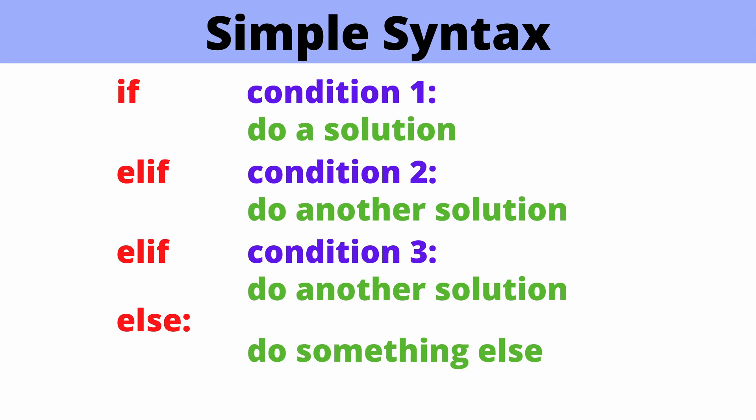The syntax for the if, elif, and else conditional statements is pretty straightforward. We begin by writing the keyword 'if' followed by the first condition on a single line. Note that the condition is followed by a colon, which tells Python that the next line is part of this block of code and should be indented four spaces.